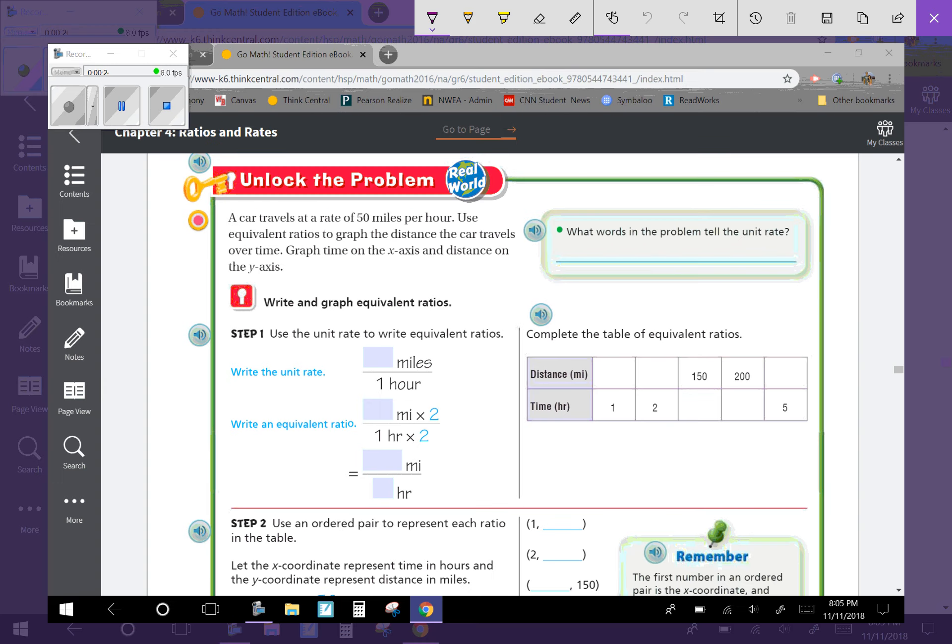What words in the problem tell the unit rate? Unit rate is told right here when it says 50 miles per hour. It's a unit rate because we're comparing it to one hour.